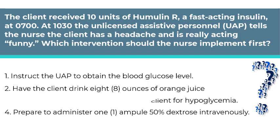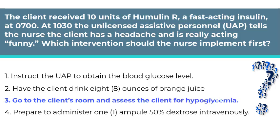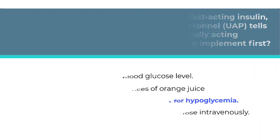The correct answer is number 3. Regular insulin peaks in 2 to 4 hours, so the nurse should consider the possibility that the client is having a hypoglycemic reaction and should assess the client. The nurse should not delegate nursing tasks to a UAP if the client is unstable. While the other options are plausible, only one answer should be implemented first — assessment is the first phase of the nursing process and is the priority in this situation.